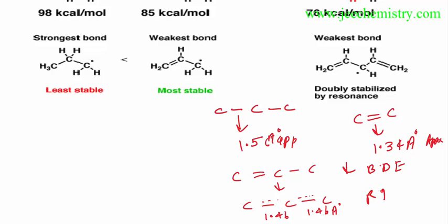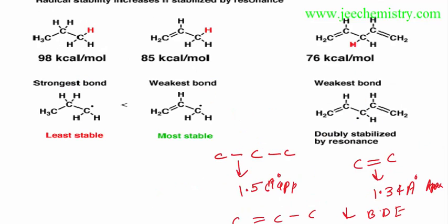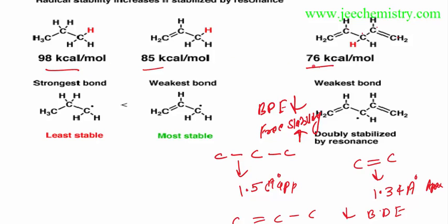As resonance increases, bond dissociation energy decreases. For example, a compound with five atoms in conjugation has a BDE of 76 kcal/mol, three atoms in conjugation gives 85 kcal/mol, and no conjugation gives 98 kcal/mol. As the number of atoms participating in conjugation increases, bond dissociation energy decreases and free radical stability increases.